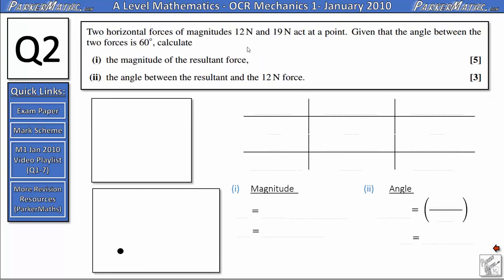In question 2, two horizontal forces of magnitude 12 Newtons and 19 Newtons act at a point. Given that the angle between the two forces is 60 degrees, calculate in part 1 the magnitude of the resultant force and in part 2 the angle between the resultant and the 12 Newtons force.